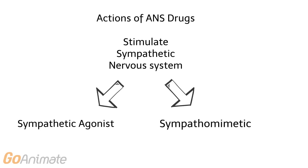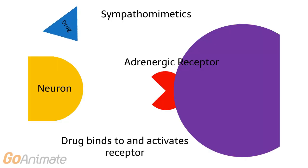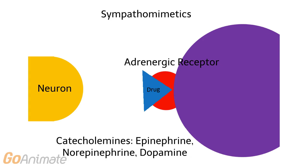Drugs that stimulate the sympathetic nervous system are called sympathetic agonists or sympathomimetics. Sympathomimetics can work either directly or indirectly. For example, a drug can have a direct effect by binding to and activating an adrenergic receptor. Examples include the catecholamines such as epinephrine, norepinephrine, and dopamine.